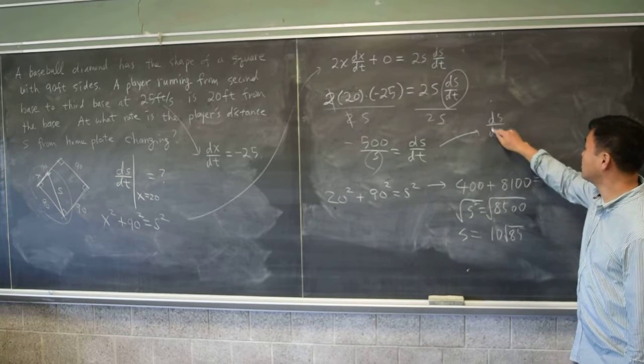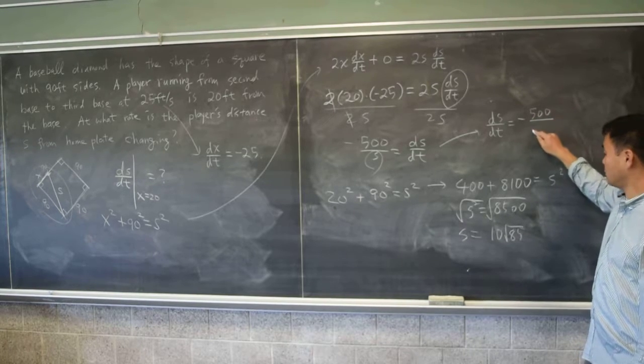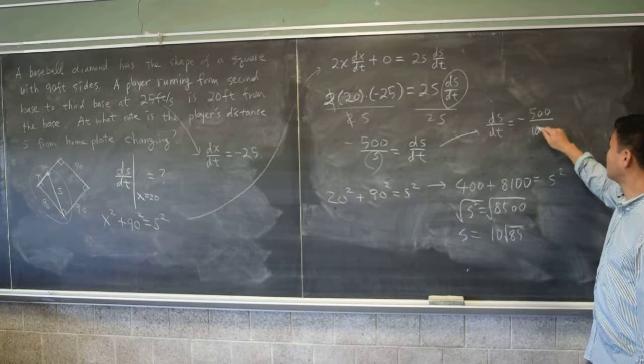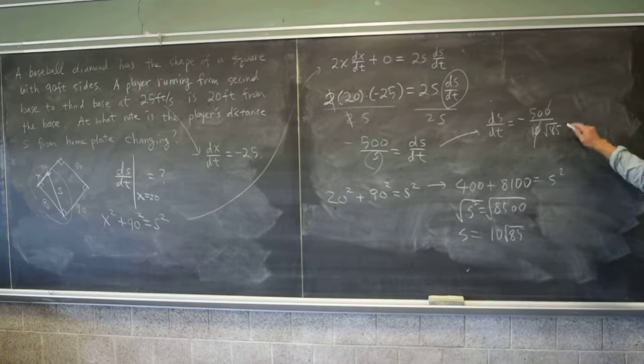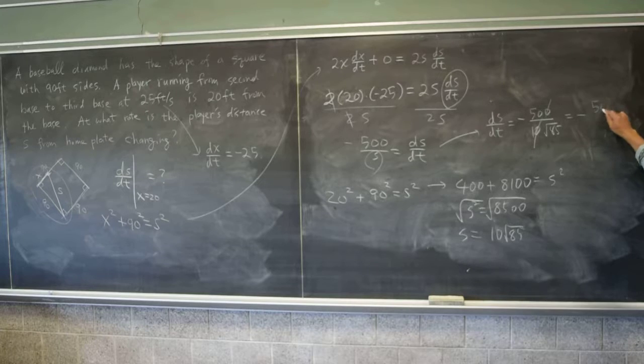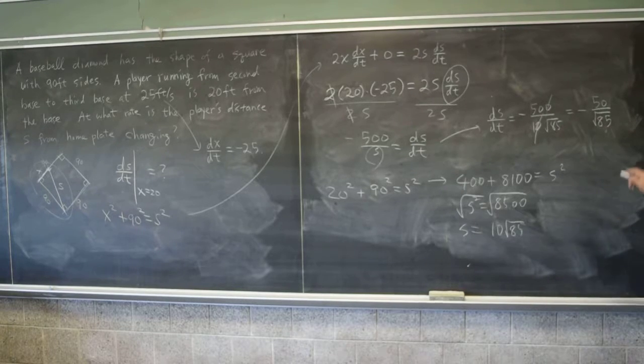When you plug that in, you get ds/dt equals to negative 500 over 10 times the square root of 85. I guess one of the zeros can be canceled. And then you get negative 50 over square root of 85. What's the unit?